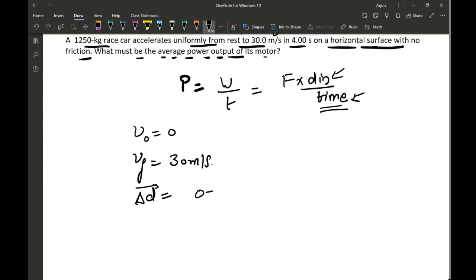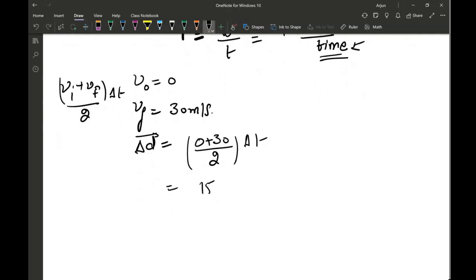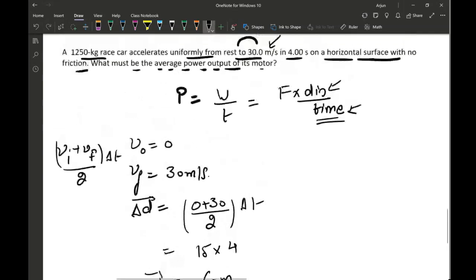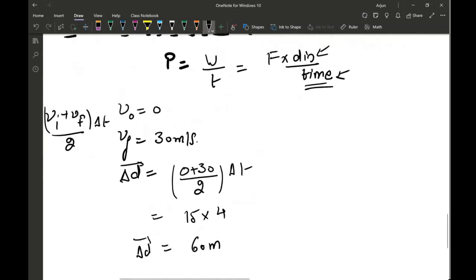This is equal to 0 plus 30 divided by 2. I'm using the formulas from kinematics. So v_initial plus v_final divided by 2 times delta t. Which will be equal to 30 divided by 2 is 15 multiplied by 4. So that comes out to be 60 meters. Displacement covered by the car will be 60 meters.